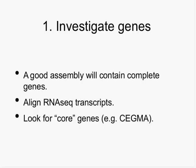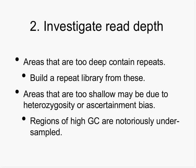When figuring out if your assembly is good, focus on how many genes you found. You also want to investigate read depth. Areas that are excessively deep — say you sequenced to 50x and find some regions at 5,000x — would contain repeats. If you have a lot of copies, build a repeat library. Areas that are too shallow can be due to heterozygosity, or sequencing ascertainment bias — for example, high GC regions are sometimes highly underrepresented, and those can be the most interesting parts of the genome.